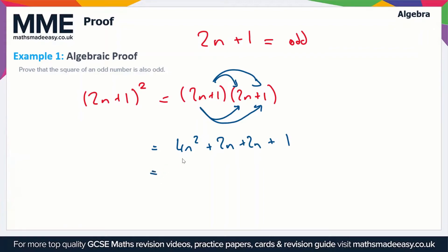Last is 1 times 1, which gives us 1. Let's collect like terms here, so we get 4n² + 4n + 1, since these 2n's add up to get 4n.